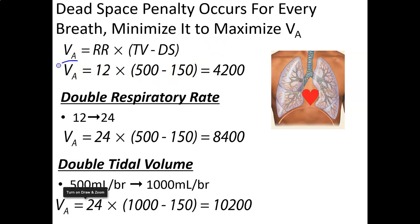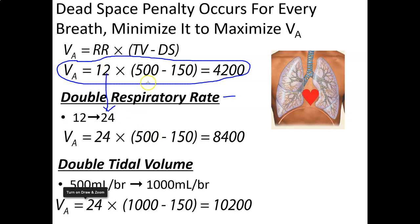If we double respiratory rate from 12 to 24, keeping tidal volume at 500 and dead space at 150, we get: VA equals 24 times (500 minus 150), which is 24 times 350, which equals 8,400 mL per minute. The VE in this case is 12,000. So doubling respiratory rate raises VA from 4,200 to 8,400.